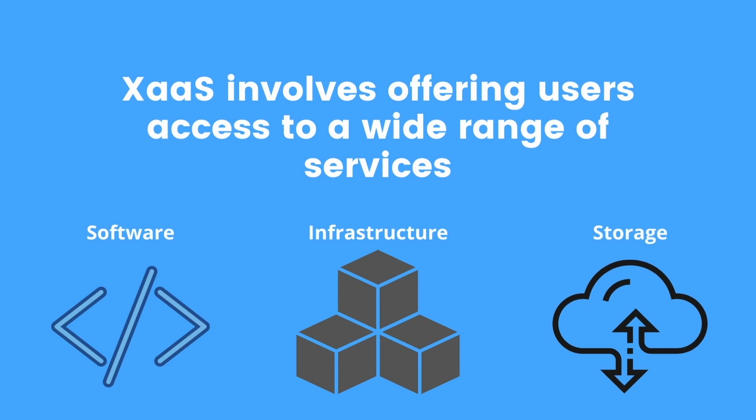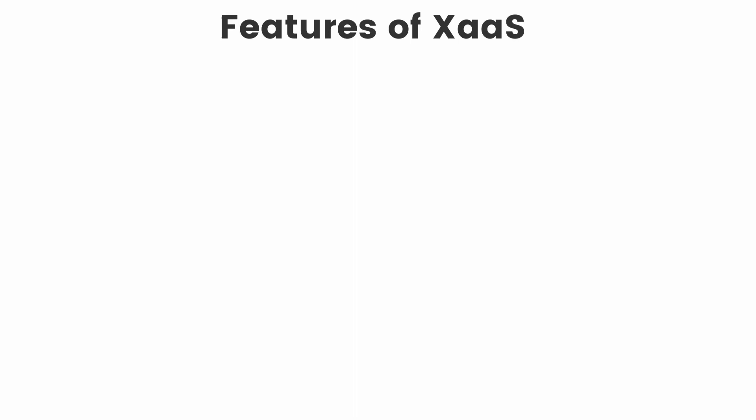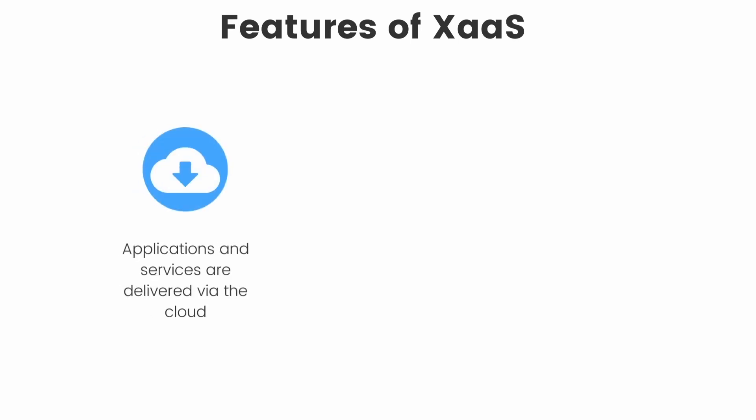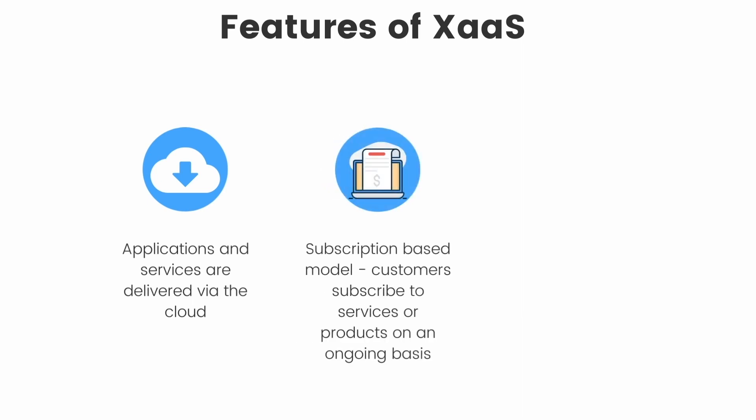Let's look at some of the main features of Everything as a Service. With XaaS, applications and services are delivered via the cloud. Typically, they run on a subscription-based model, which means that customers subscribe to services or products on an ongoing basis. Another important feature of XaaS is that it is highly scalable.